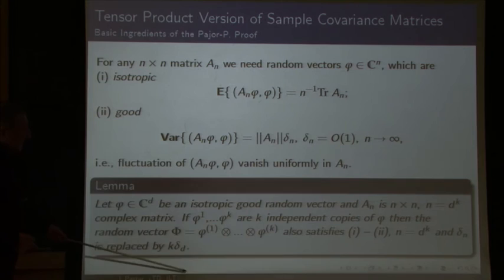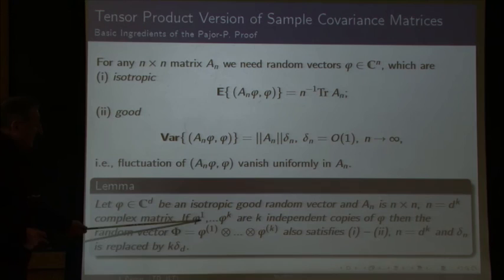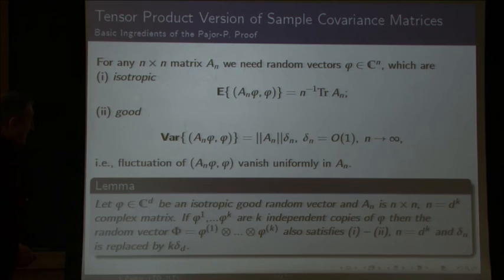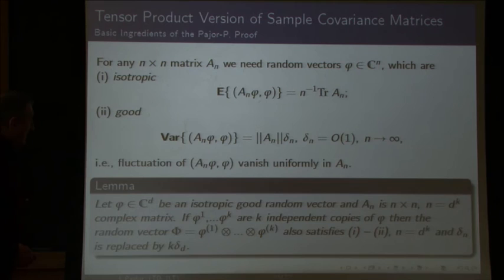To apply this scheme to the tensor product case, we use one additional lemma: if you have k independent identically distributed vectors and each one is good, then their tensor product is also good. This is proved by induction, averaging step by step with respect to each factor using the martingale scheme. With this lemma, the entire proof goes through and we are done.